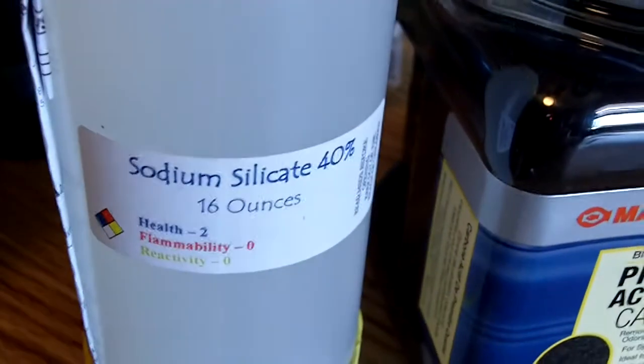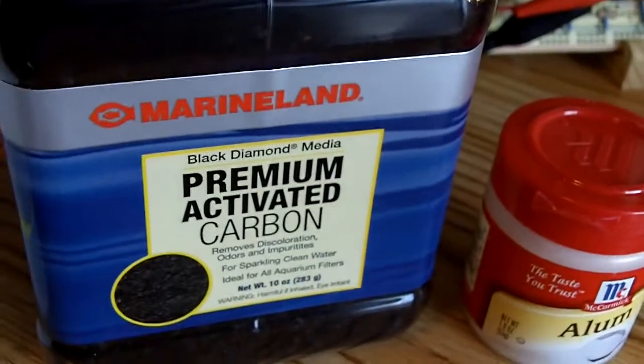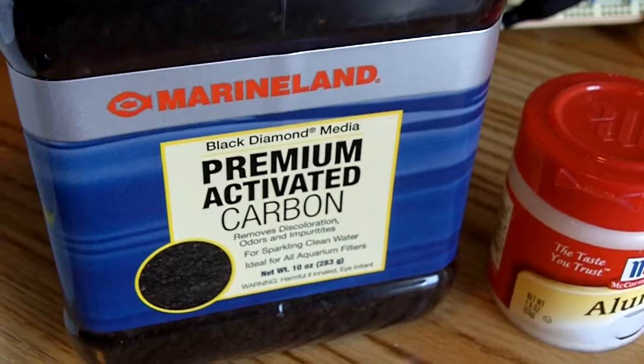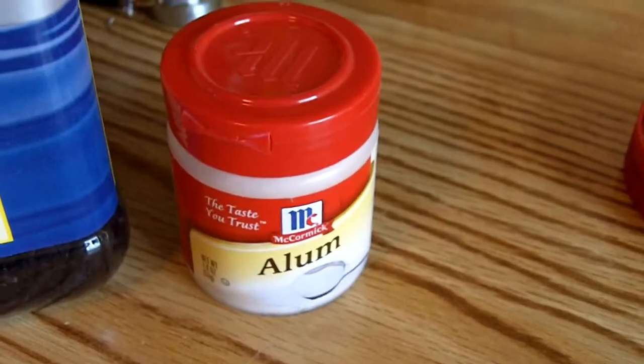If you go to his channel and look at that, he does a real good job of explaining how he did this and how he made it and how he mixed everything. I'm going to do the best I can on mine here. What I did here is I used sodium silicate, premium activated charcoal, which is just an aquarium filter product, and alum, which you can get at any supermarket just about.